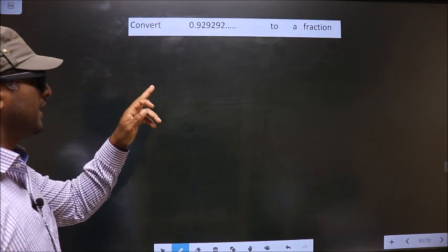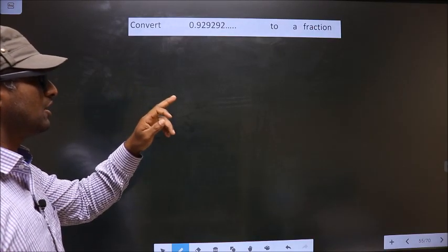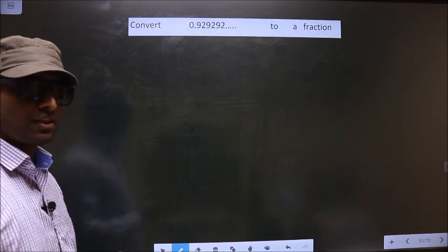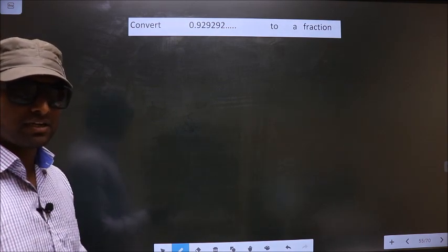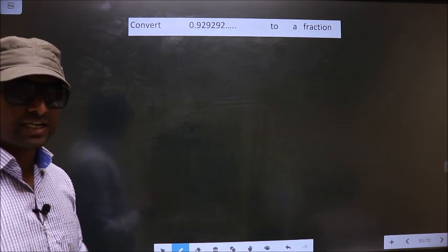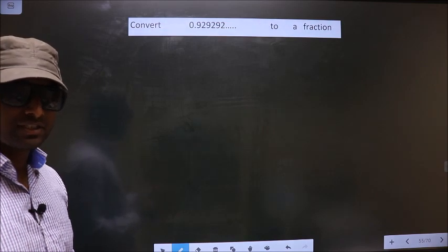Convert 0.929292 and so on to a fraction. Here we have to convert a recurring decimal to a fraction. How do we convert? See here.